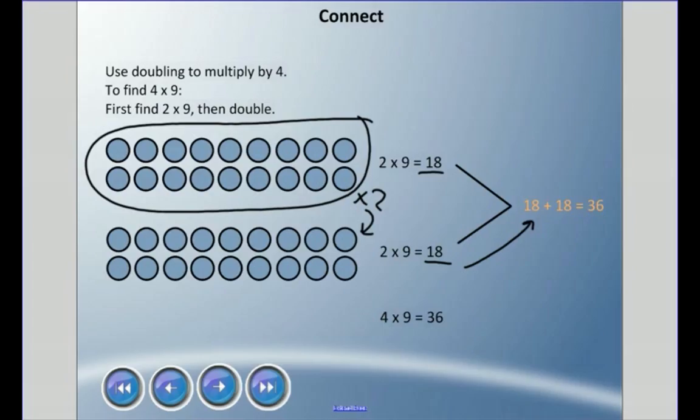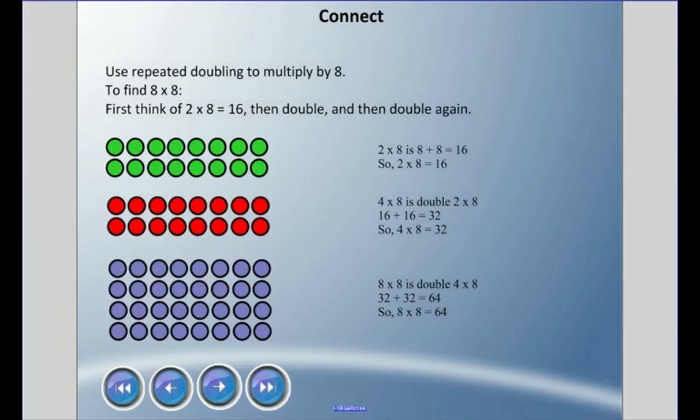I can use something called repeated doubling to multiply by 8. Repeated means over and over, and we're going to keep doubling until we find the answer. If I need to find 8 times 8 and I don't know that fact, well maybe I know 2 times 8 equals 16. If I double it again, I have 4 times 8, which is 32, because 16 plus 16 equals 32.